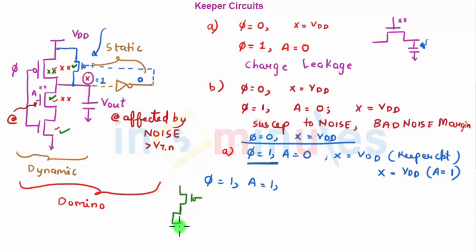So technically my circuit reduces to a keeper transistor, a transistor A which is having an input 1 which is on, a footer transistor phi which is also 1 so this is on. So technically I want a 0 at my output.